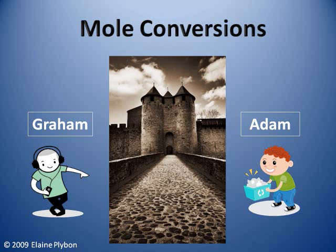In this story, there are these two dudes: Graham and Adam. Graham has some really cool mp3s he'd like to share with his friend Adam, but they don't have any computers. And there's another problem — the places they live are very far away, and there's a huge wall and castle between them. Along the castle wall is this really huge, scary dude who has a big mole on the end of his nose. Everyone calls him the mole because of this.